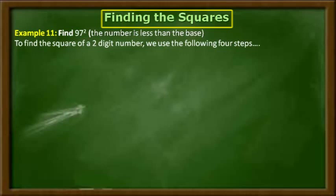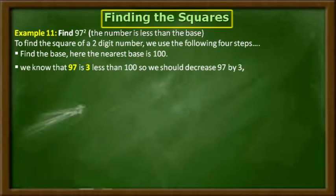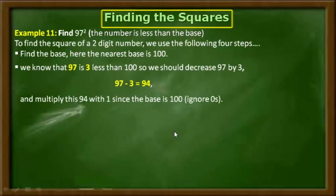The first step is to find the nearest base to the given number 97, and the nearest base to 97 is 100. Here the number 97 is 3 less than the base 100. So we have to decrease 97 by 3. By subtracting 3 from 97 we get the difference as 94. Now, ignoring the zeros in the base, we multiply 94 by 1, and we get 94 as it is — we take this as the left part of the answer.